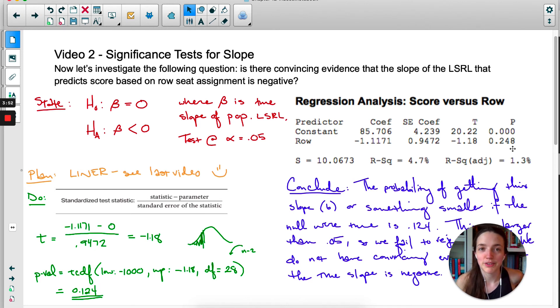However, if this were a free response question and you were asked to do a significance test, you would still have to show your work. As far as the College Board goes, you have to show your work to get full credit. But this is a nice way to check your answer and make sure that you're on the right track.